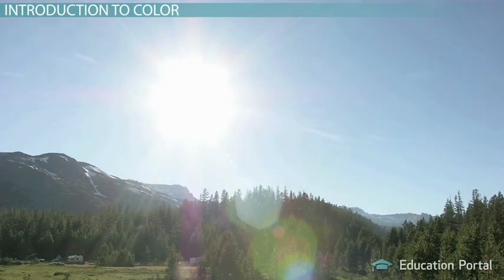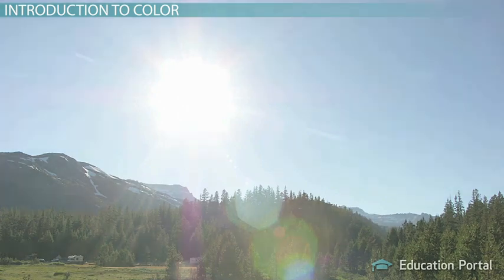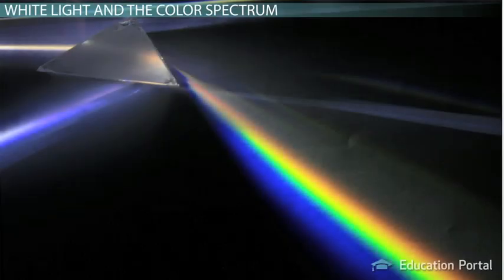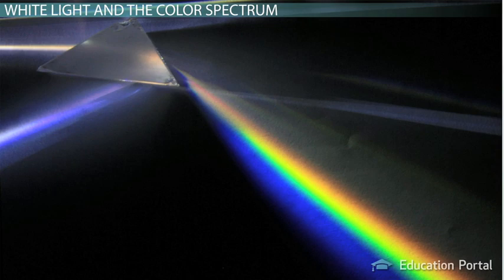To answer these questions, we first need to look into the mysteries of white light. If you pass a beam of white light through a prism, you will see the light split into the colors of the rainbow. There's red, orange, yellow, green, blue, and violet all spread out.